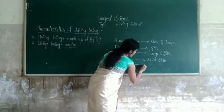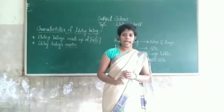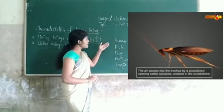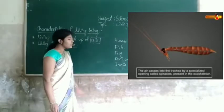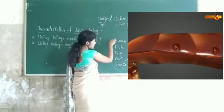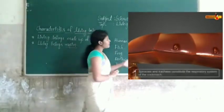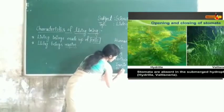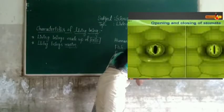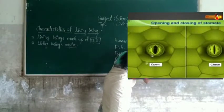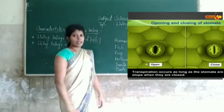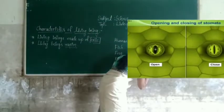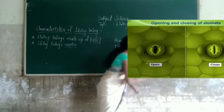Next are insects — for example, cockroach. Cockroach respires with the help of spiracles, which help it to respire. Different organisms respire in different ways. Next, plants. How do plants respire? Plants respire with the help of stomata. Stomata are small openings on the cell which help the plant to respire.